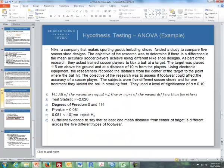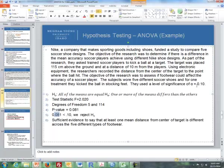Then we take the .081 and we compare it to our level of significance, which is .10. Since .081 is less than .10, we reject the null. Therefore we have sufficient evidence to say that at least one mean distance from center of target is different across the five different types of footwear. I just gave you a couple of examples of how you can use ANOVA. It's typically when we have different groups, or more than two groups, and we're comparing the means between those groups.